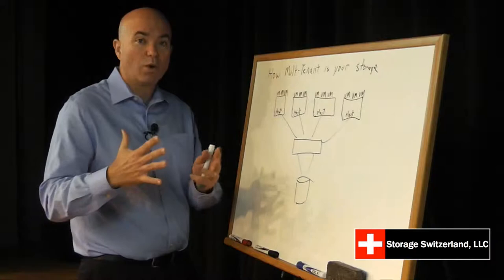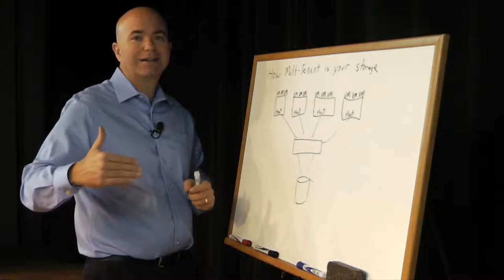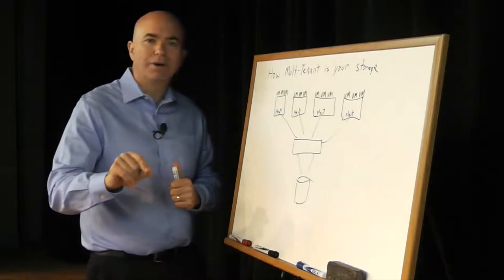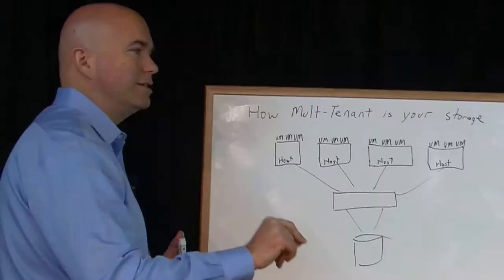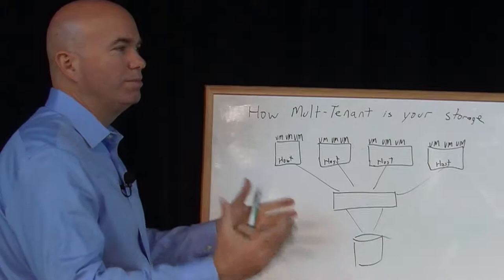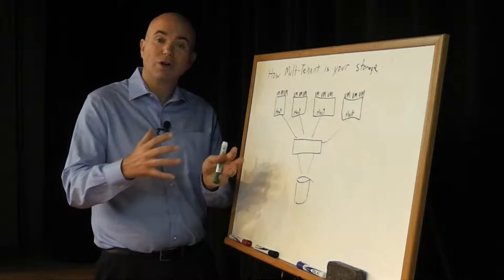We want to make sure that if one subscriber has a real busy process, it doesn't impact the performance of another subscriber. But we're seeing interest in the enterprise now because the enterprise kind of has subscribers. They're called lines of business.